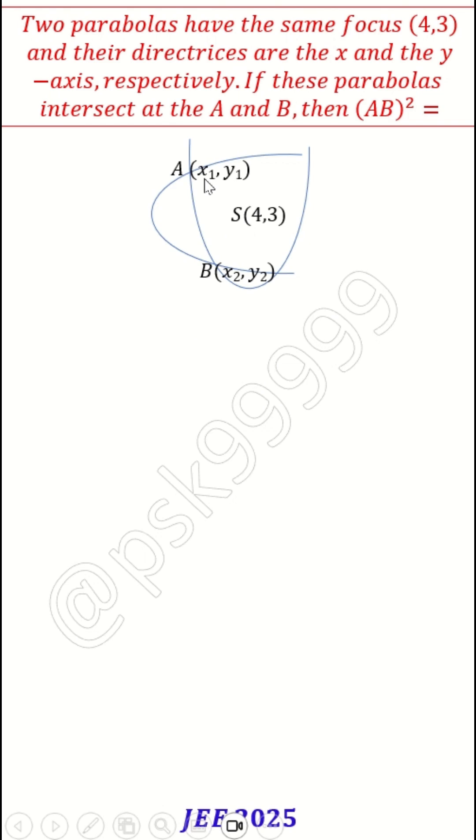Now we take a general point x comma y on the parabola, this intersection point which is basically on both the parabolas.